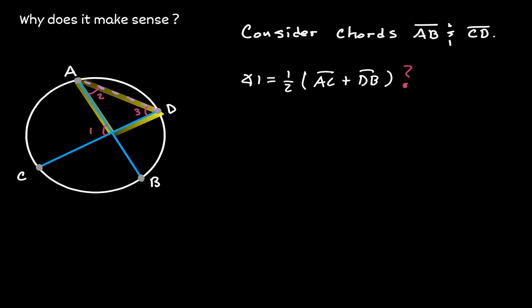There exists a relationship between those three angles. Notice that angle 1 is the exterior angle of the triangle. Therefore, angle 1 is going to be equal to the sum of angle 2 and angle 3.